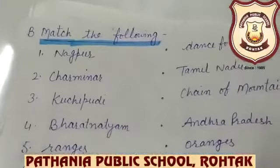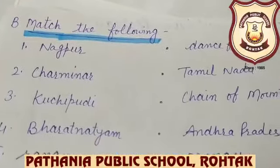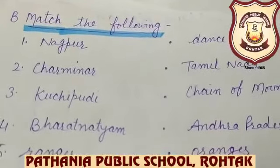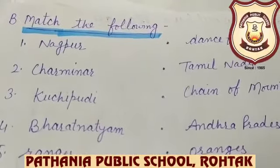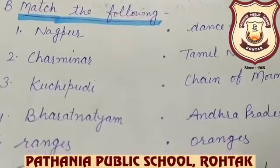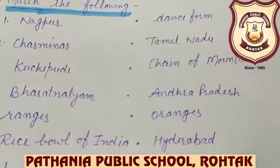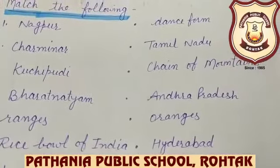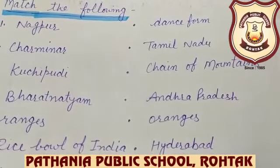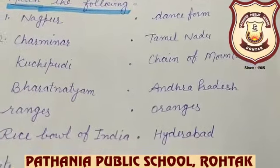Match the following. Nagpur — famous for something. You just read carefully and match accordingly. Items to match include: Charminar, Kuchipudi, Bharatanatyam, Ranges, Rice Bowl of India. Options given are: Dance Form, Tamil Nadu, Chain of Mountains, Andhra Pradesh, Oranges, Hyderabad.